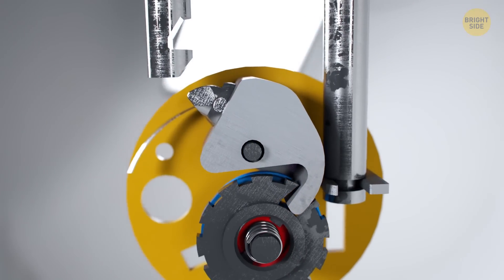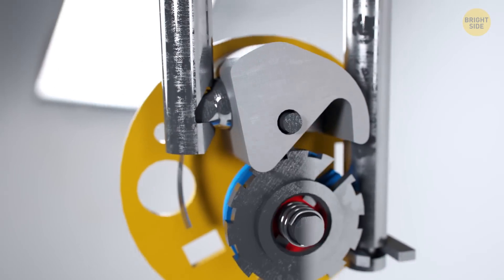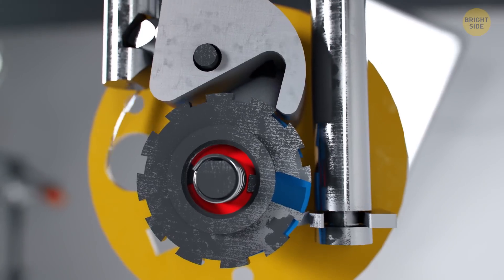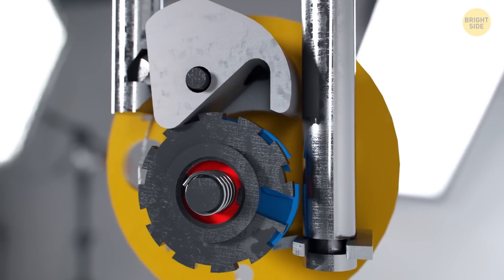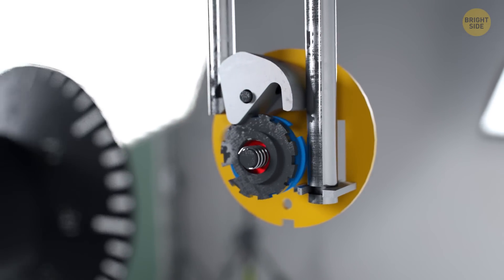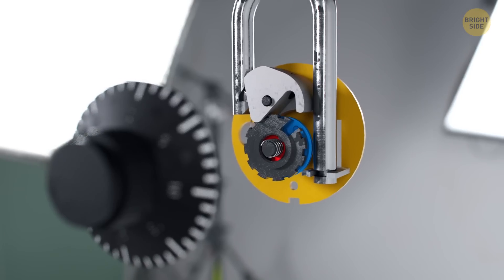But when at least one of the discs of the mechanism isn't lined up with the others, the lever can't rotate because the left end of the crescent at the bottom rests against the disc. Now you can't lift the shackle, and the lock remains closed. So you can operate the first disc of the code mechanism directly, but the rest will stay in place. We have teeth on each disc for this purpose.